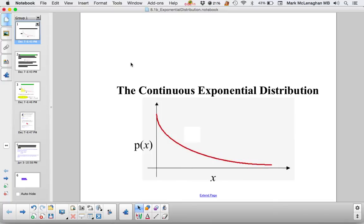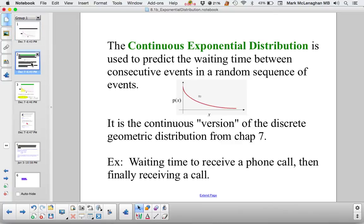Here we have a graph of the exponential distribution. The continuous exponential distribution is used to predict the waiting time between consecutive events in a random sequence of events.